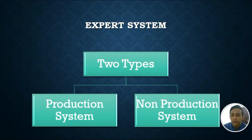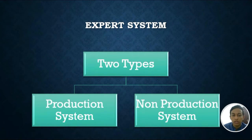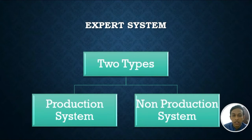In expert systems there are two types: the production system and the non-production system. The production system is the most common form of architecture used in expert and other knowledge-based systems. It is also called a rule-based system. This type of system uses knowledge encoded in the form of production rules — that is, if-then rules. The rules have a conditional part on the left-hand side and a conclusion or action part on the right-hand side. Each rule represents a small chunk of knowledge in the given domain of expertise.